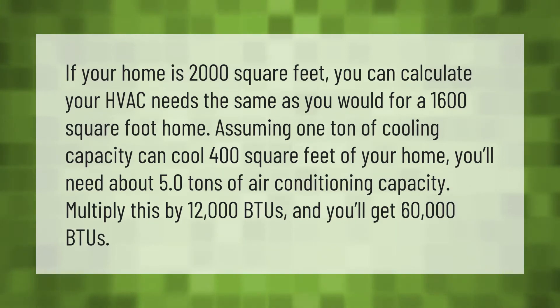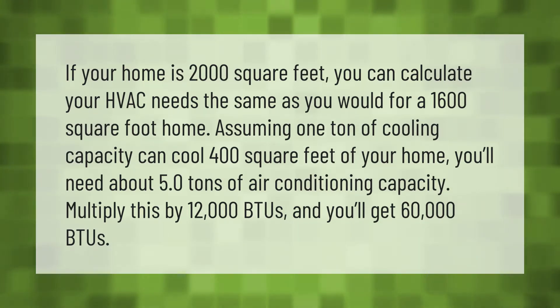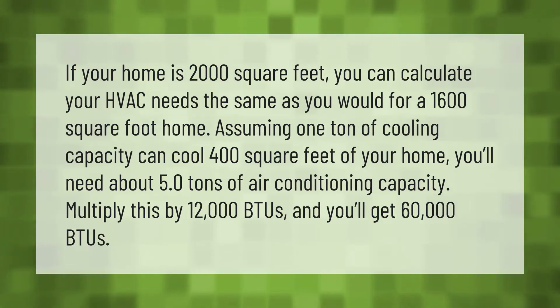If your home is 2,000 square feet, you can calculate your HVAC needs the same as you would for a 1,600 square foot home, assuming one ton of cooling capacity can cool 400 square feet of your home.